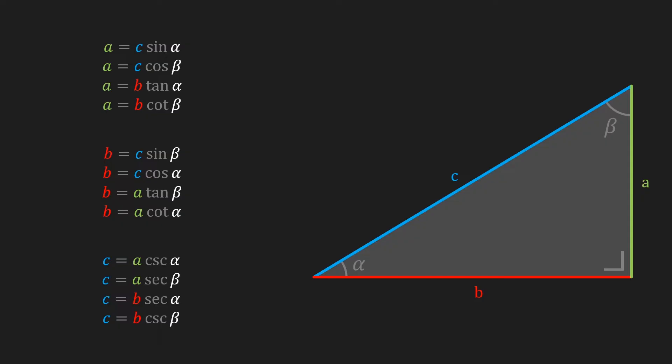Finally, we can rearrange all these formulas once again to come up with four expressions to calculate the length of each side of the triangle. These formulas are just derived from the trigonometric function definitions we saw earlier. To get a better understanding of what all of this means, I want to introduce to you the unit circle.